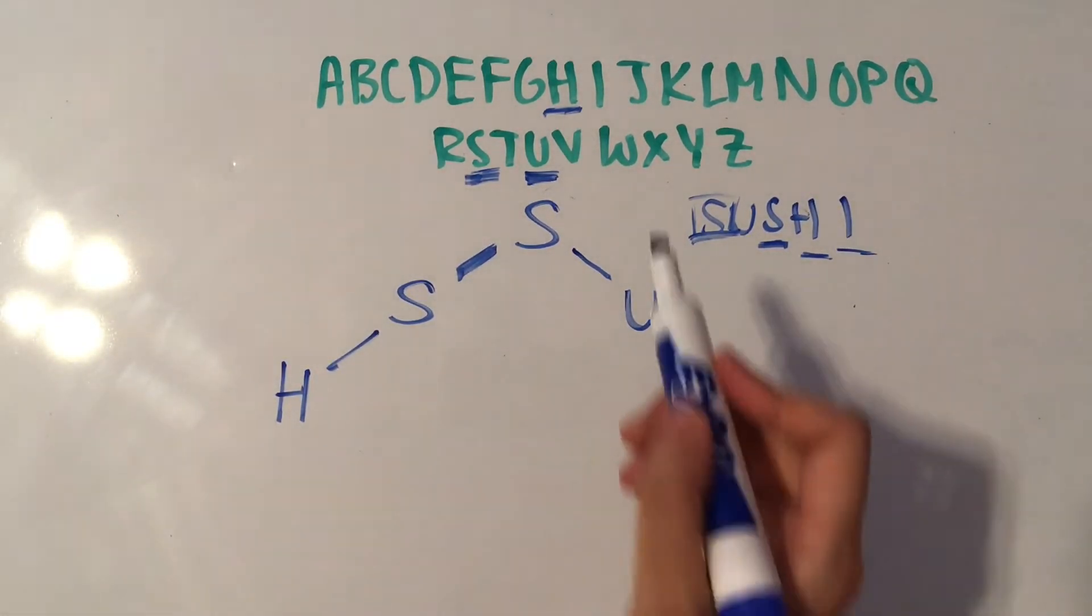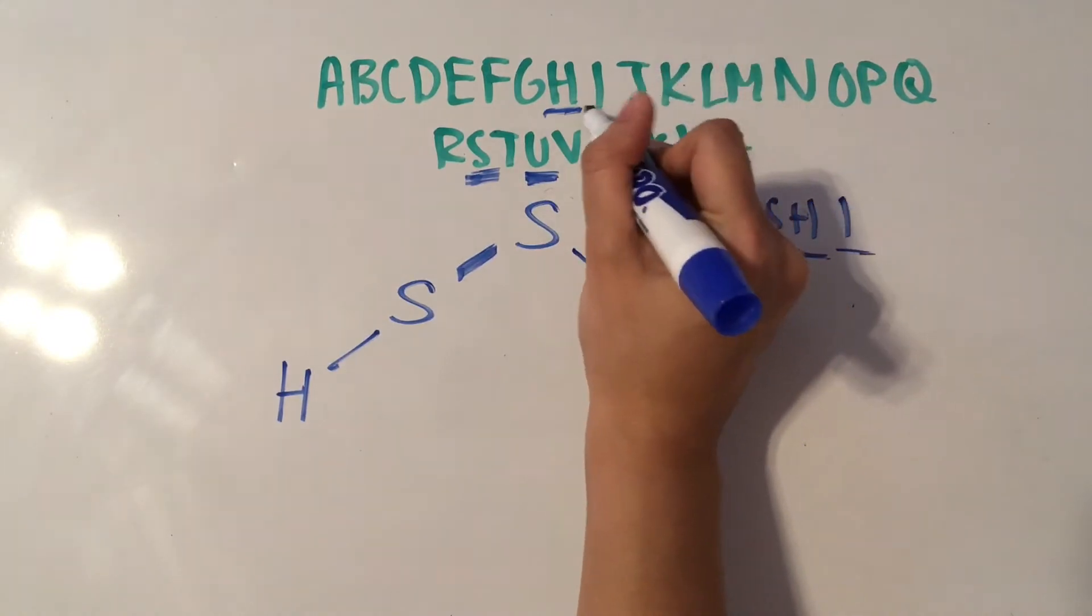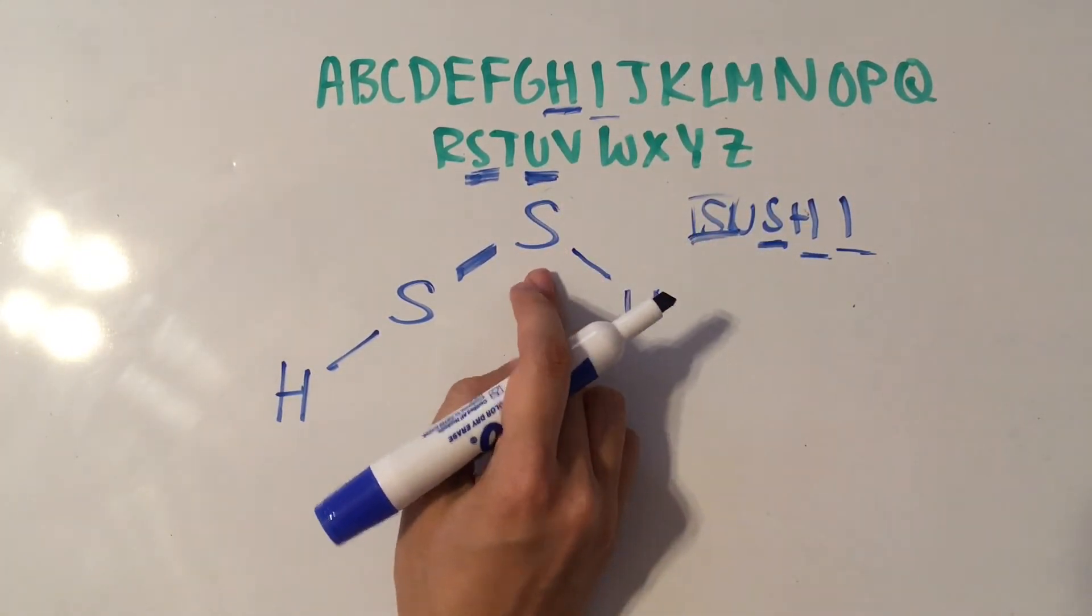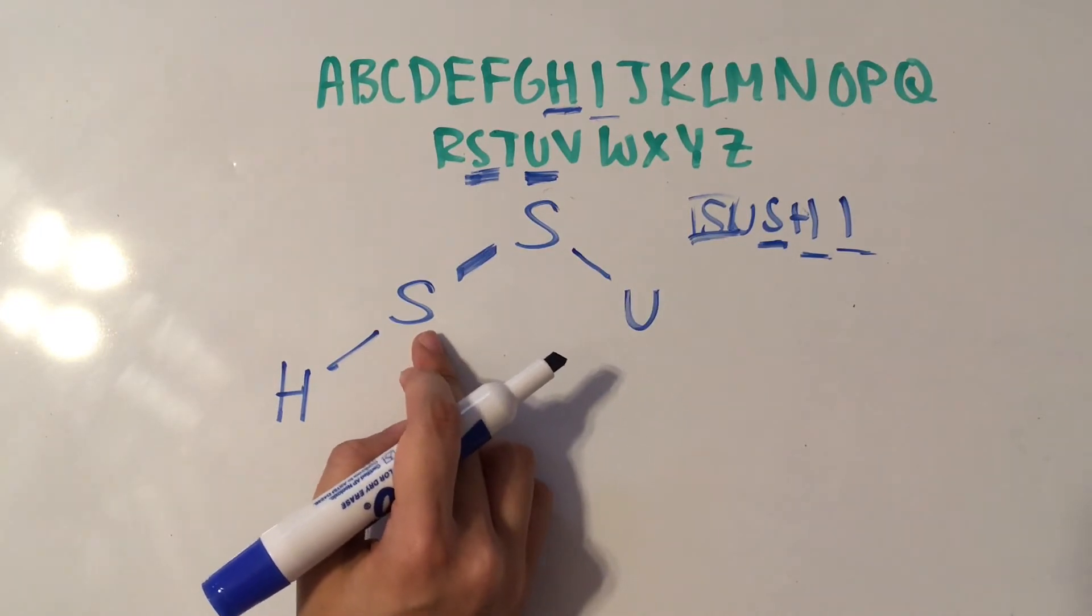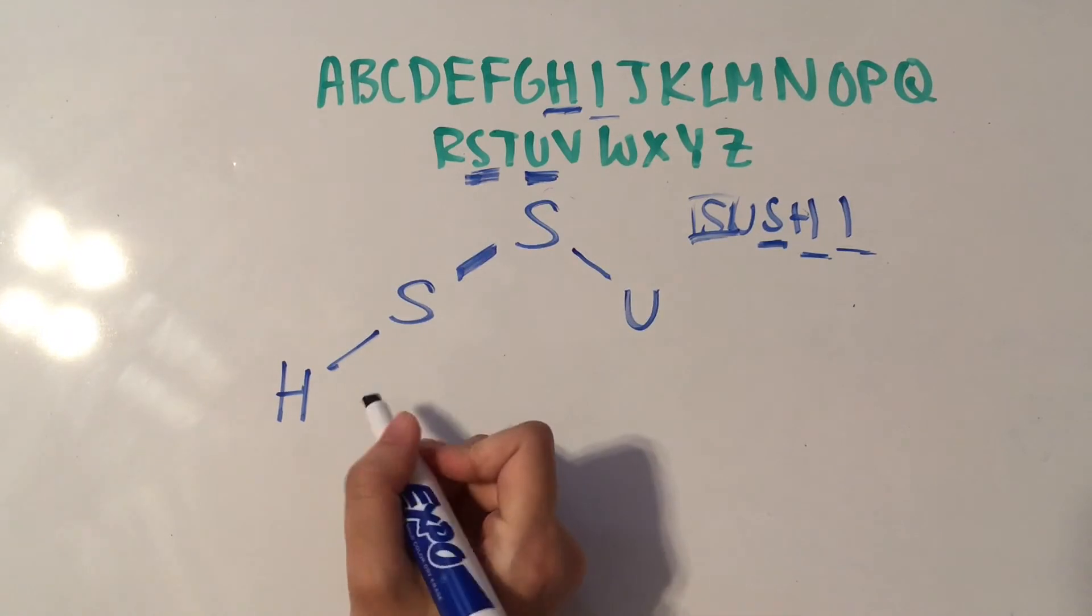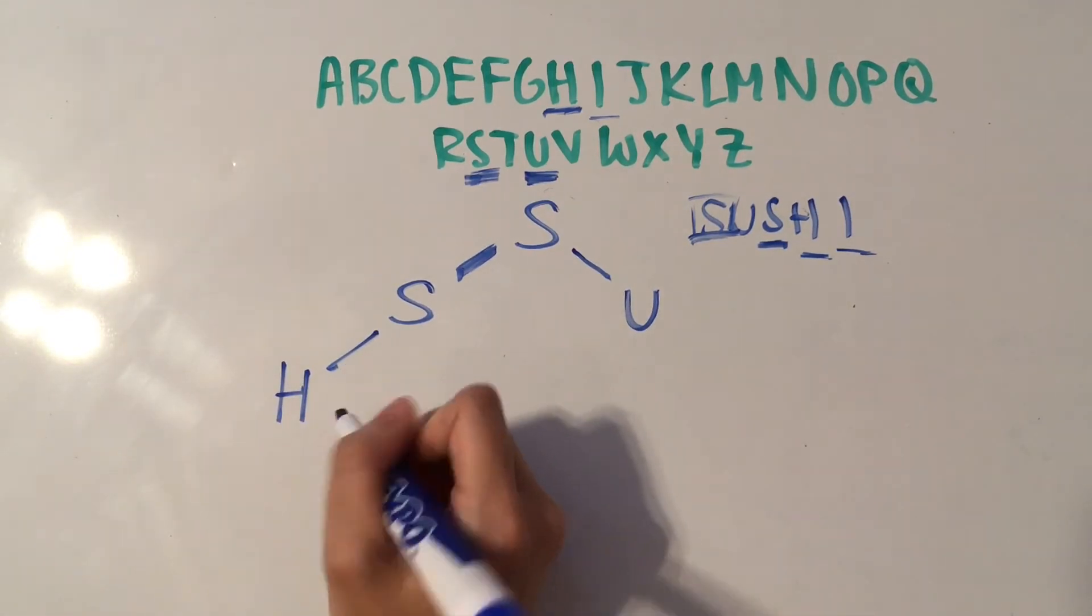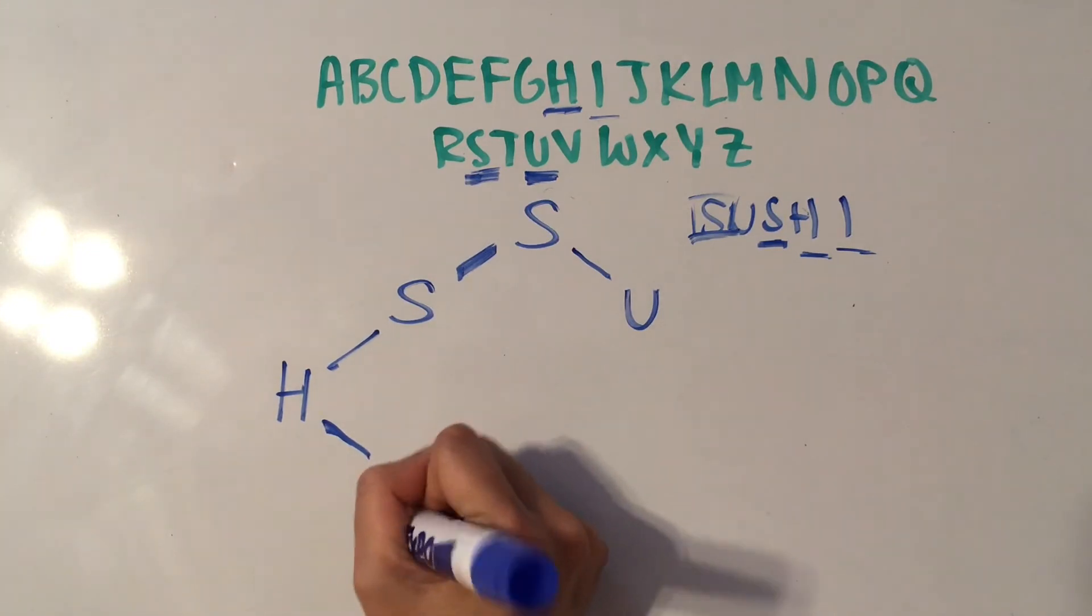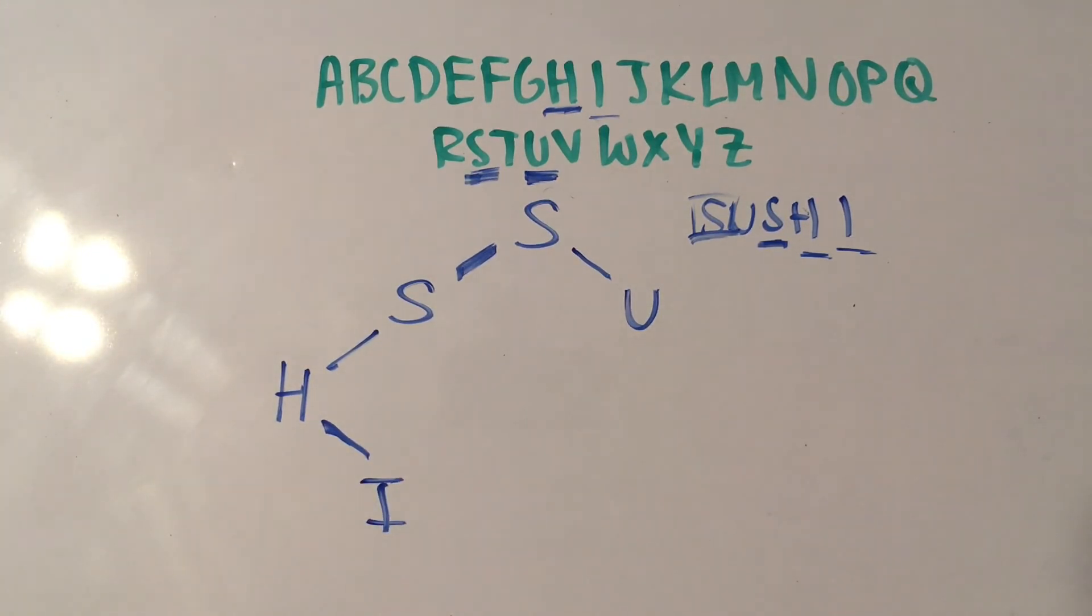So our final letter is I, and I comes right after H. So we're going to start at the top again, and then move to the left because it's before S, and then move to the left again because it's before the second S, but it's after H. So we're going to draw a branch to the right, and then put in our I. And that's how you make a binary search tree.